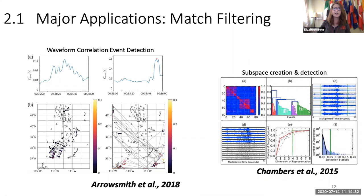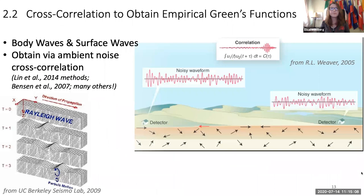Another shout out of other applications of match filtering. There's waveform correlation event detection, which is basically what we just talked about. This is from a paper from Stephen Aerosmith, who will be presenting next week on array processing. We also have subspace creation and detection to classify different events together. An example of that is shown here from Chambers et al. in 2015. There are many examples of using match filtering, so feel free to post in the Slack channel.